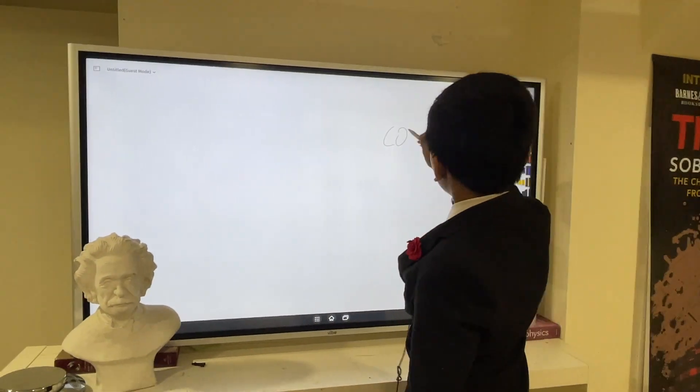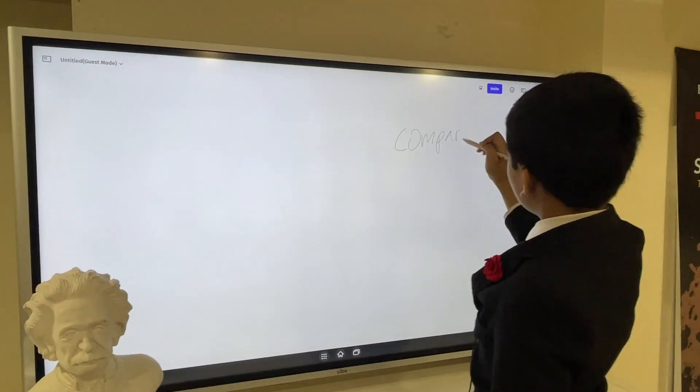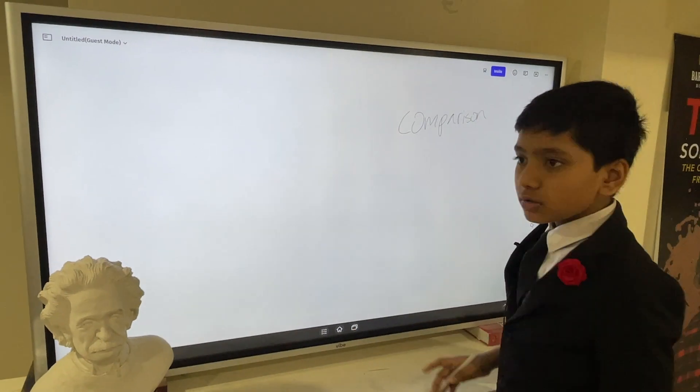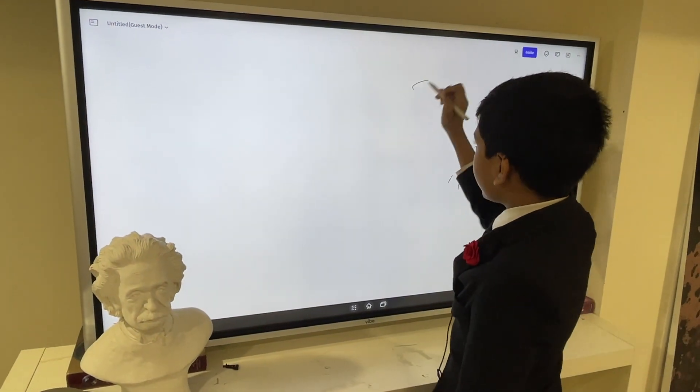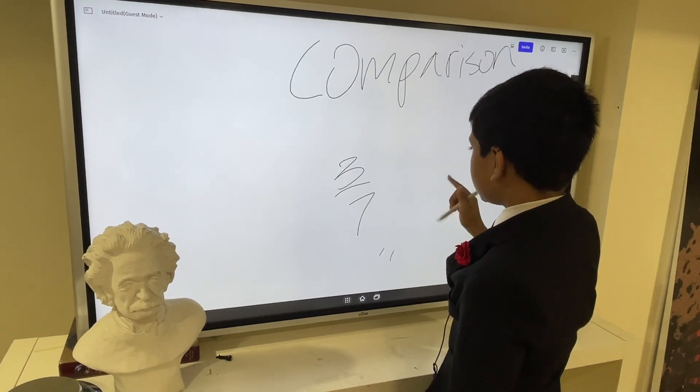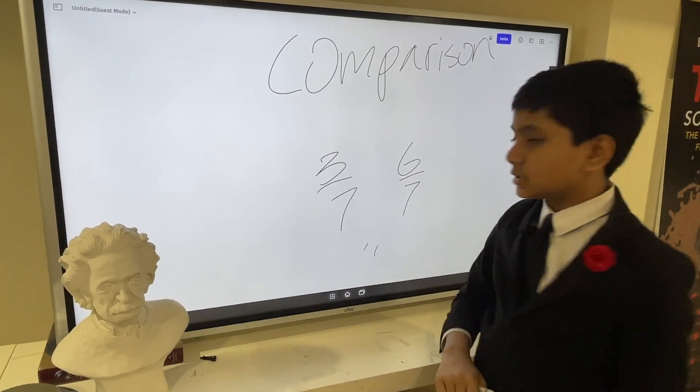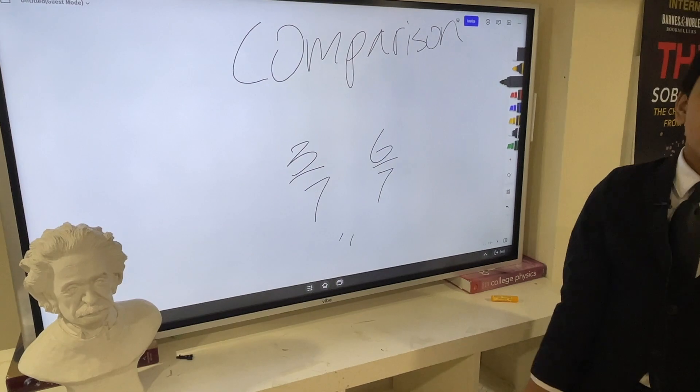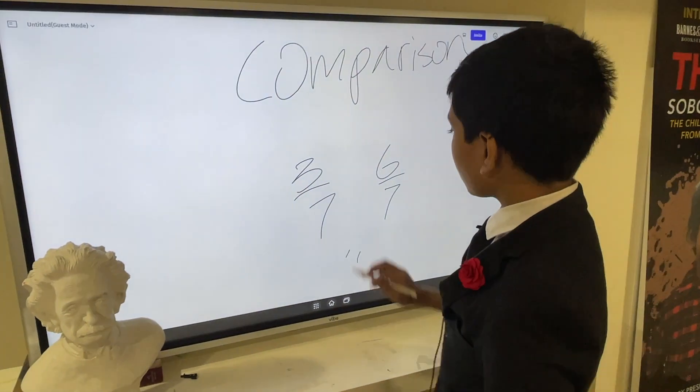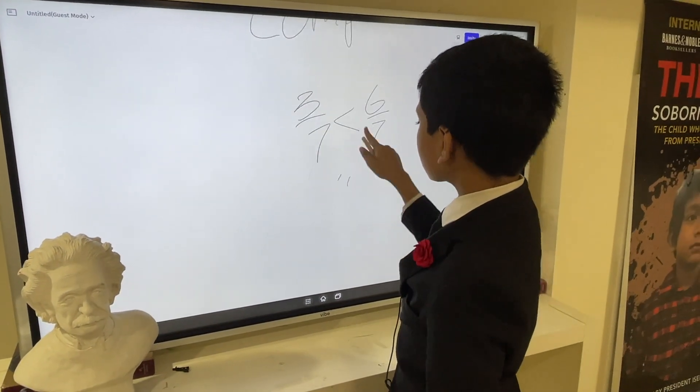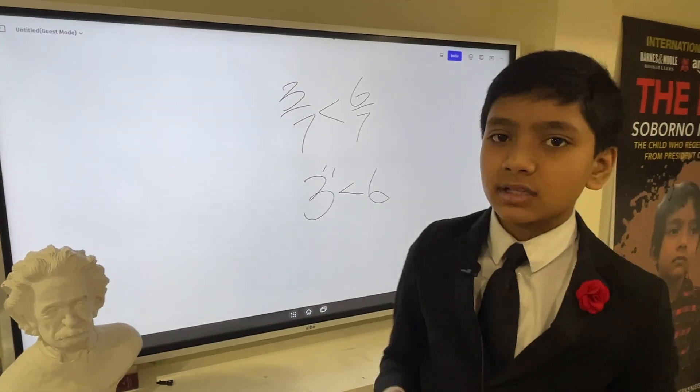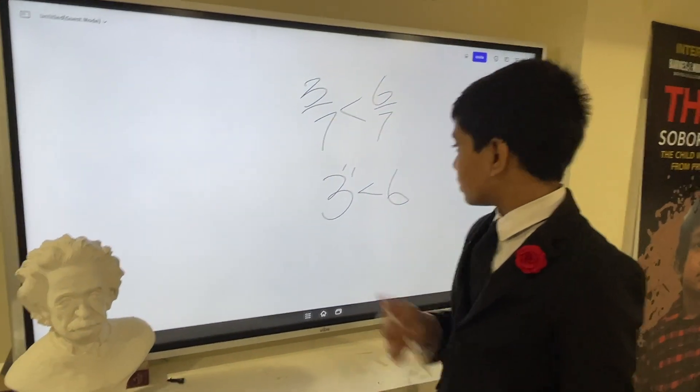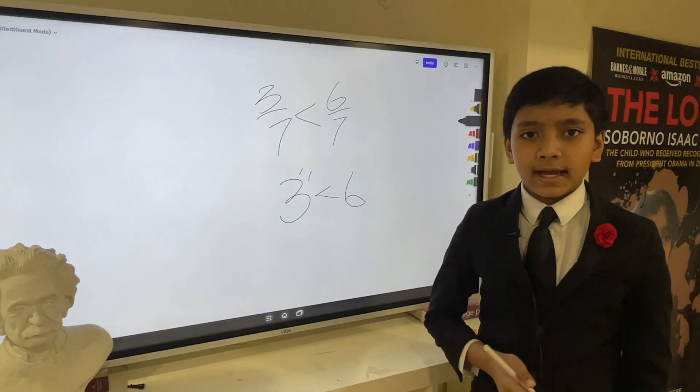What we want to do when we compare fractions is this: we have two fractions with the same denominator. This is pretty easy. The one with the bigger numerator is greater. Just like how three is less than six, three over seven is less than six over seven.